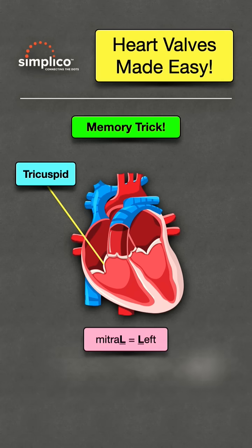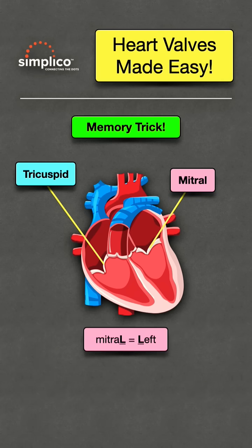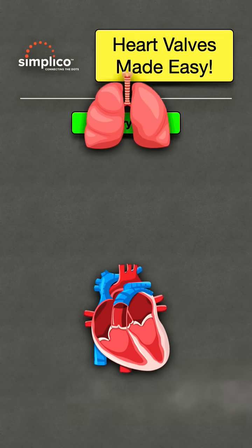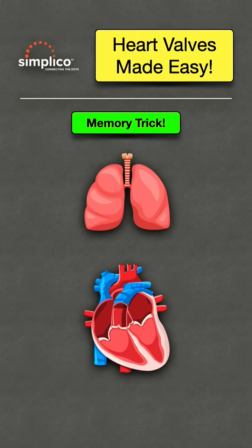Next, use the L in mitral and the L in left to remember the mitral valve is on the left. Here's another memory trick: you can use the lobes of the lungs as a guide.